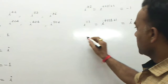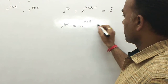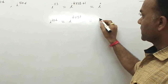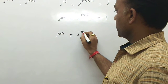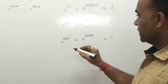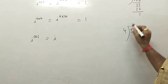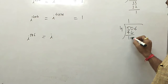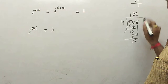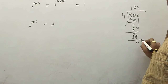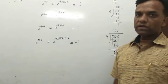For i^204: 4×51 = 204, remainder is 0, so answer is 1. For i^404: 4×101 = 404, remainder is 0, so answer is 1. For i^506: 506 divided by 4 gives 4×126 + 2, remainder is 2, so answer is −1.